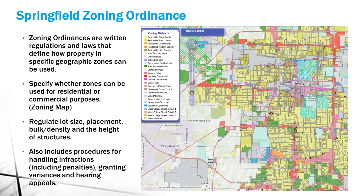Zoning tells you where to place your building. In a residential neighborhood, for example, if all the houses are set back 50 feet from the road and you want to build 10 feet from the road, the city is probably not going to allow that. You have to check setbacks, bulk density, and height limits. I have a really good example for this one.